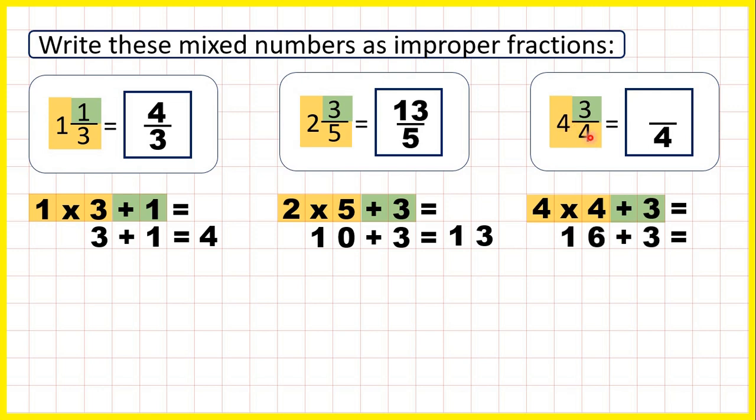Four times four is sixteen, and sixteen plus three is nineteen. So our numerator is nineteen, which means our improper fraction is nineteen quarters or nineteen over four.